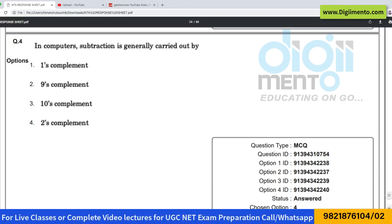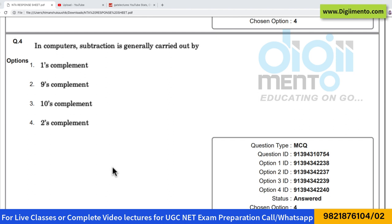Now let us look at question number 4, and this is also one of the very easy questions that you can get in your examination. We are saying, in computers, subtraction is generally carried out by which of the following arithmetic.